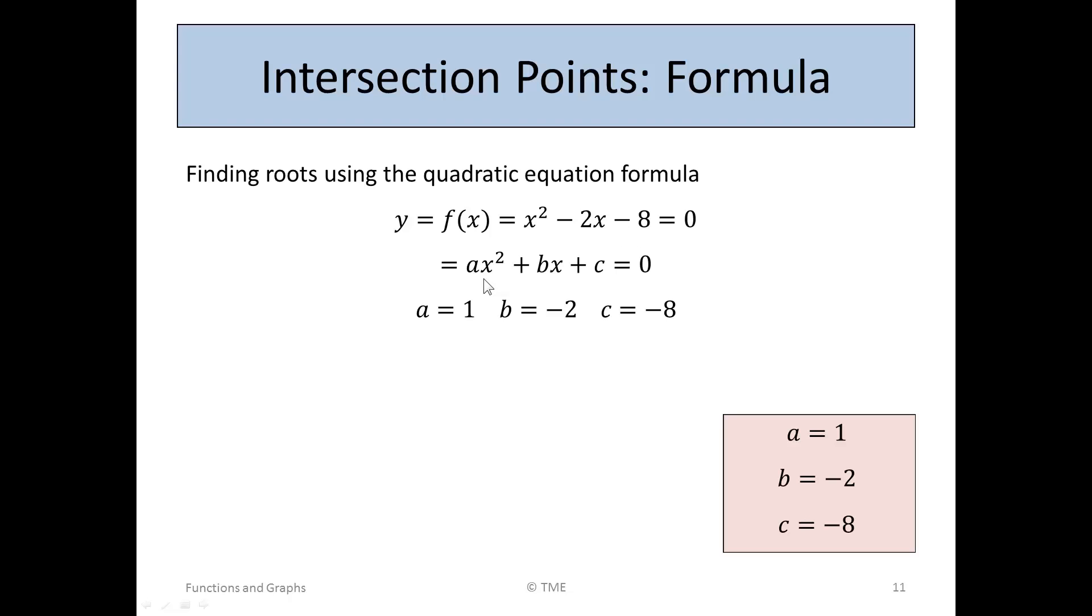So in our case, we didn't have ax squared. We had just x squared, or a was 1. Instead of bx, we had minus 2x. So b was minus 2. And for c, the term without x, we got minus 8.